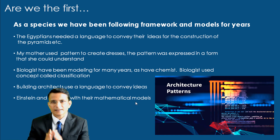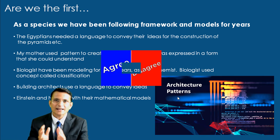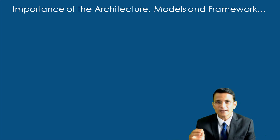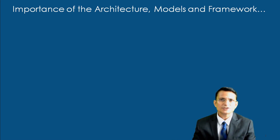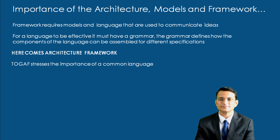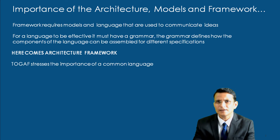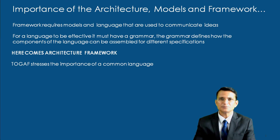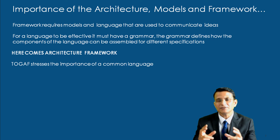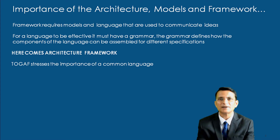Now let's understand the importance of architecture models and frameworks. What does a framework need? A framework needs a language, a model to communicate. For a language to be effective, you need grammar. Grammar defines the components of the language that can be assembled for different specifications. So models and language are the essential parts when you are defining a particular framework.